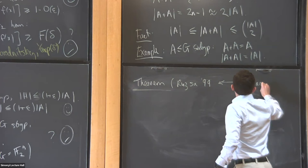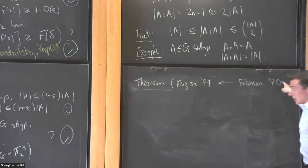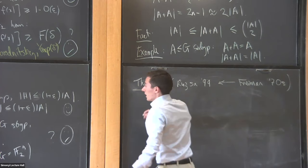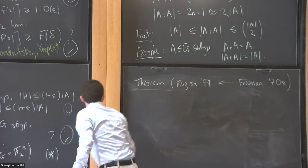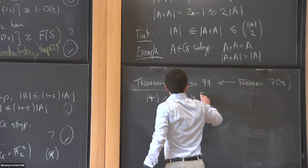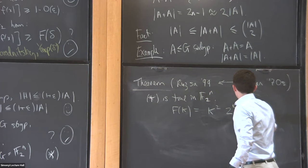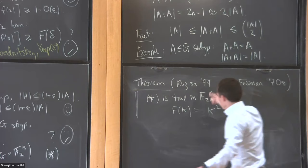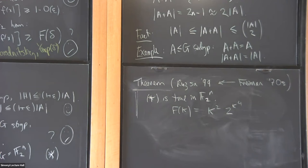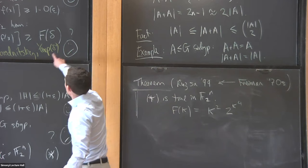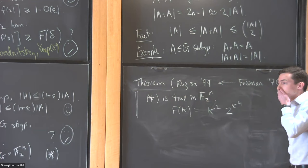This is called the Freiman-Ruzsa theorem — Ruzsa 1999 — building on work of Freiman from the 1970s. Freiman was only interested in the integer case; Ruzsa generalized it to the finite field case. This statement — let's call it star — is true in F2^n. Moreover, you can take the function of k to be k-squared times 2 to the k to the 4th. So this is a couple of pages of argument, some clever manipulations. This is the Freiman-Ruzsa theorem.